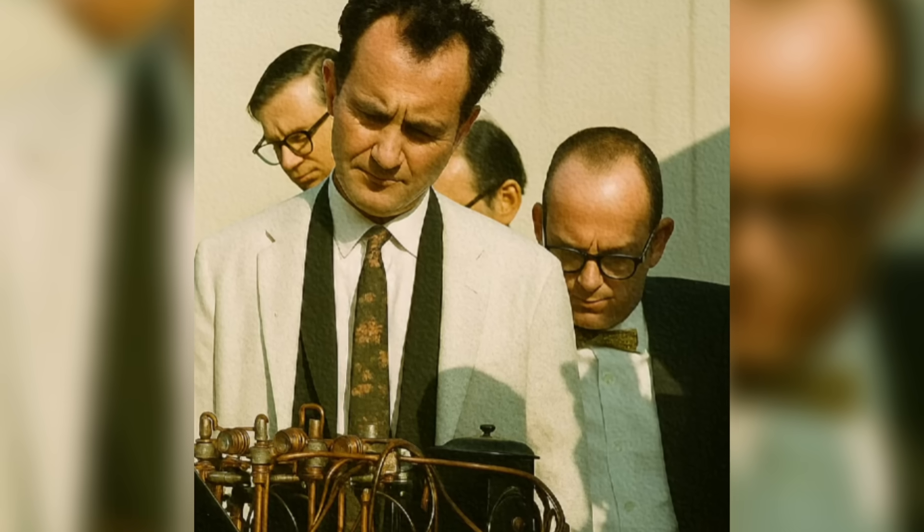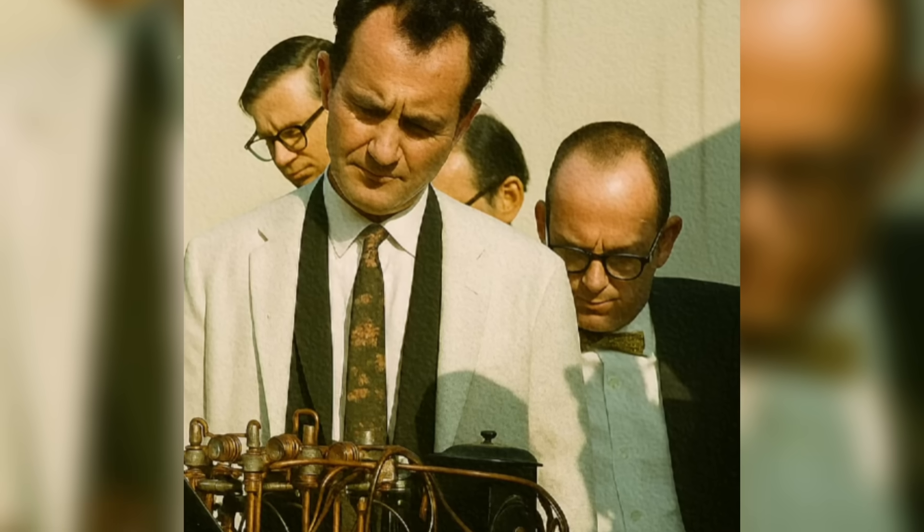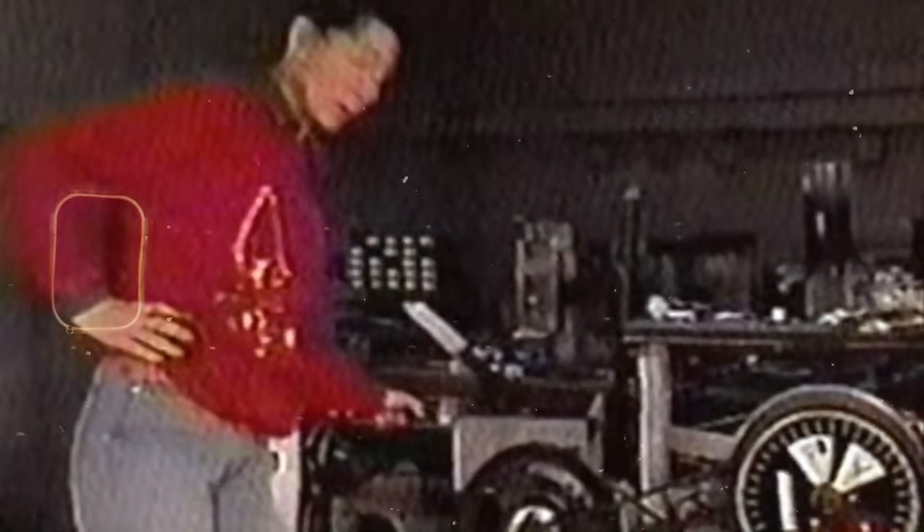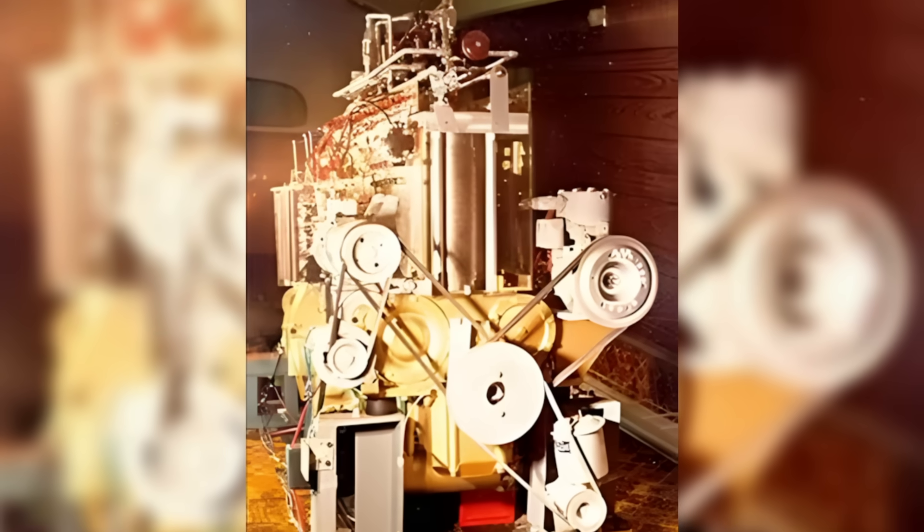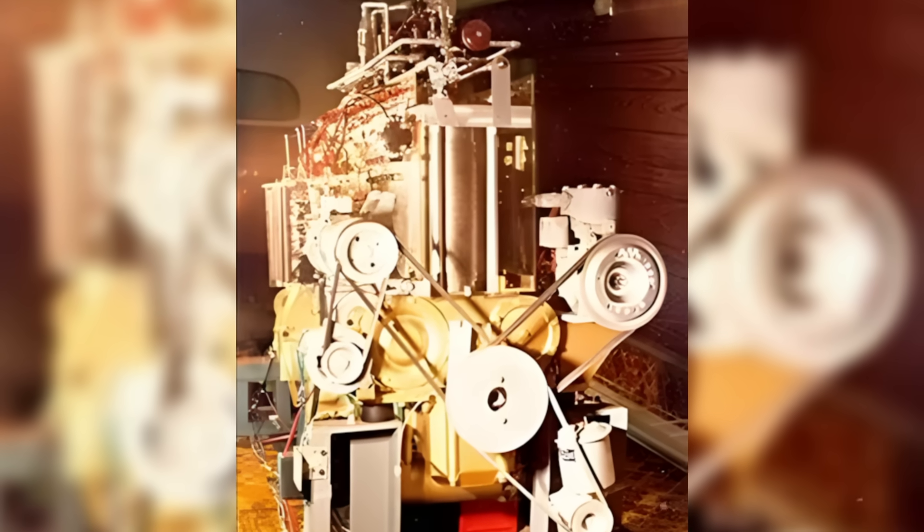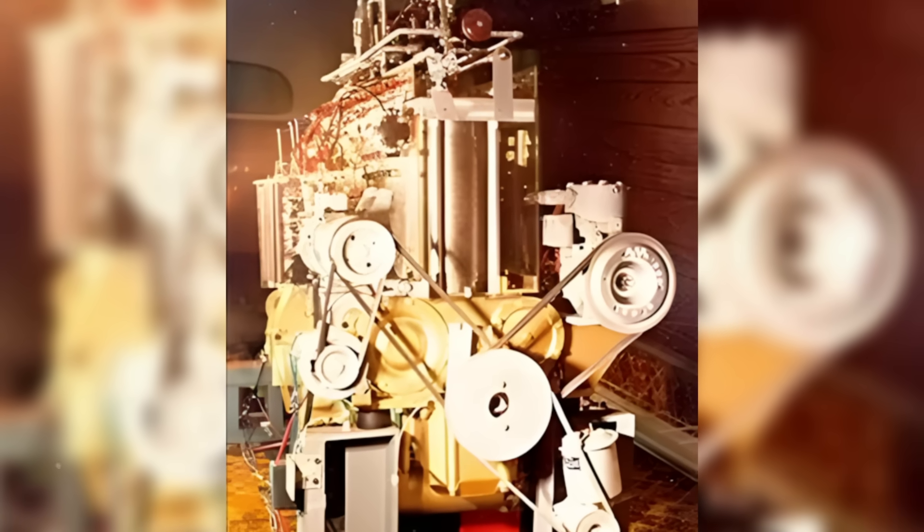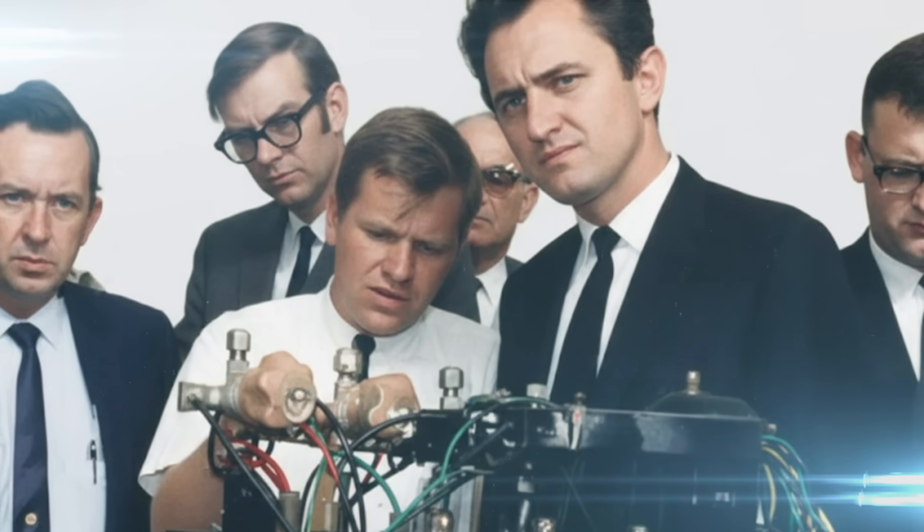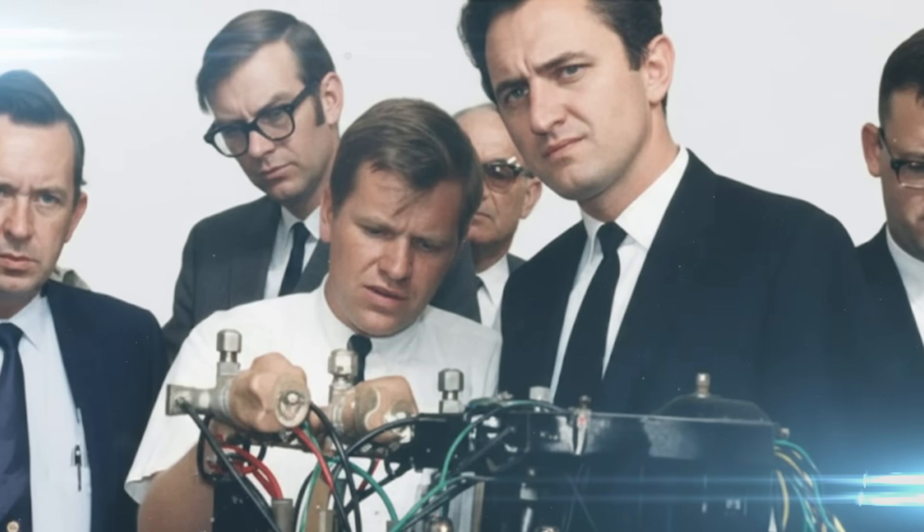Papp, deeply shaken but defiant, rejected the accusation. He claimed Feynman's interference had caused the explosion. Some witnesses even supported that claim, saying the physicist had tampered with grounding wires during the test. Others believed it was sabotage, that someone didn't want the world to see a functioning free energy device. Whatever the truth, the explosion destroyed not only the prototype, but also Papp's credibility.